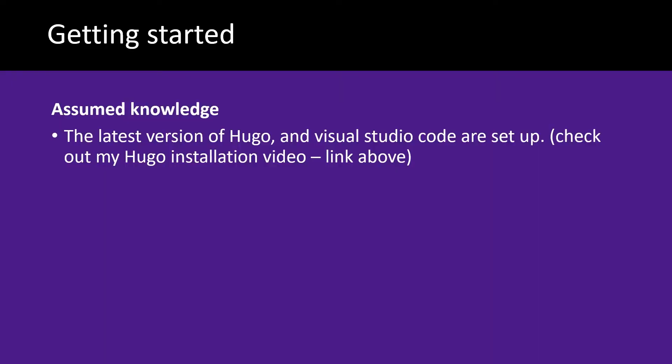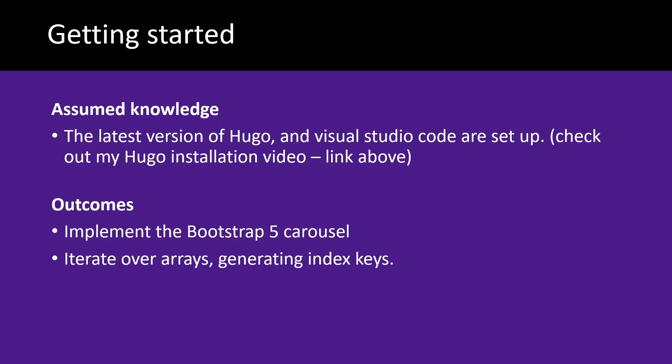I'll assume you have the latest version of Hugo and Visual Studio Code installed and set up. You can check my video on Hugo installation, I'll link that above. On completion of this video you'll be able to implement the Bootstrap 5 carousel, and you'll also be able to iterate over arrays generating index keys.